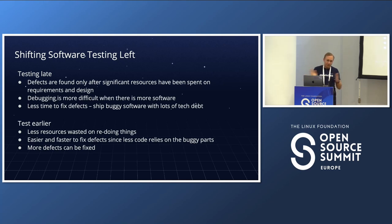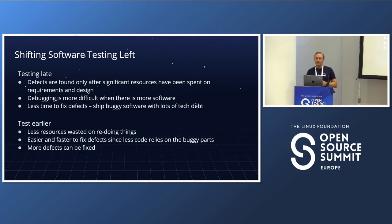Instead, if you shift left and test earlier, fewer resources are wasted redoing things. It's easier and faster to fix defects since less code relies on the buggy part, and more defects can be fixed overall.